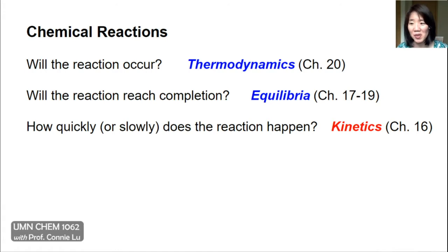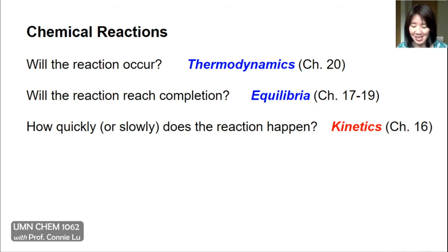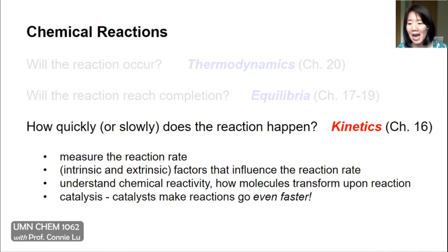This semester we're going to address these questions in this order. The first question — will it occur — is a matter of energy, and that's called thermodynamics, which will be covered in chapter 20. Will the reaction reach completion is about chemical equilibria, and we're going to discuss different kinds of chemical equilibria from chapters 17 through 19.